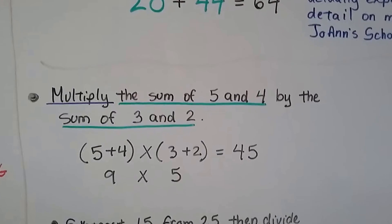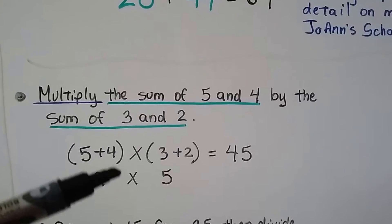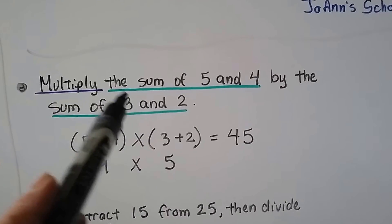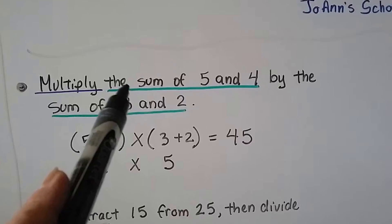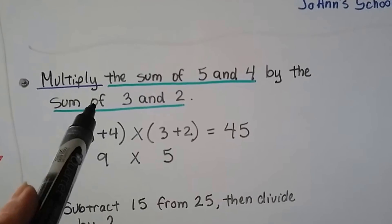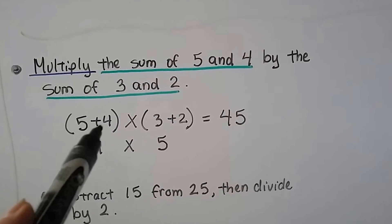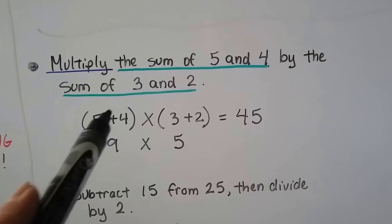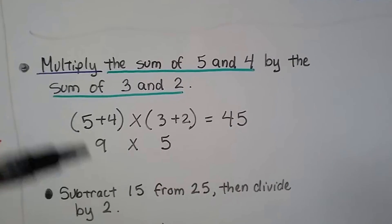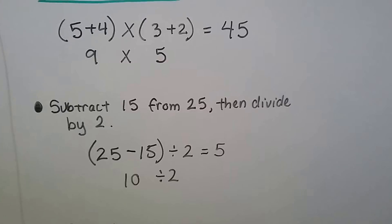Check this one out: 'Multiply the sum of 5 and 4 by the sum of 3 and 2.' We break it down — 'sum' means addition, so sum of 5 and 4 is (5+4) and sum of 3 and 2 is (3+2). We multiply those sums: (5+4) times (3+2). That's 9 times 5, which equals 45. You just have to break it down, read it a couple times, and go slow.